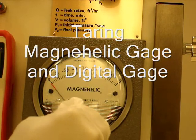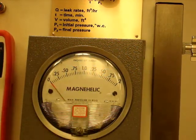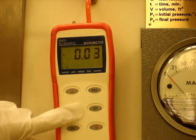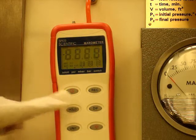Zero the magna-helic gauge with a small flathead screwdriver and then zero the digital gauge by pressing the hold button for 3 seconds.